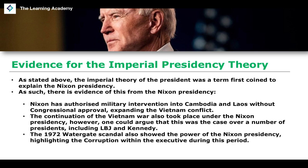In 1972, the Watergate scandal highlighted the corruption of the Nixon presidency — a plan to break into the Democratic National Committee offices and steal election secrets, which became known as Watergate after the hotel where it took place. You could argue this shows how much power Nixon believed he had. However, a counter-argument is that despite how egregious the corruption was, it ultimately failed, as it forced Nixon out of office — he had to resign before being impeached.